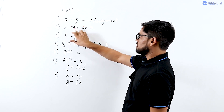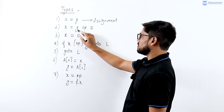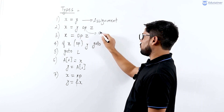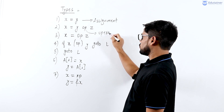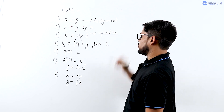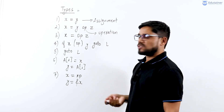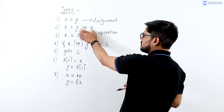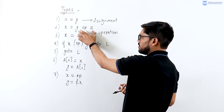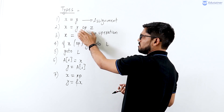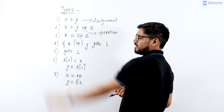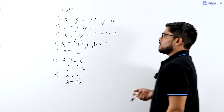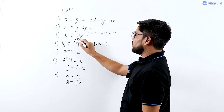The second type of operation is x = y op z, where op depicts an operation — it could be addition, multiplication, or any other operation. So y and z first have to be evaluated and then the result will be assigned to the variable x.